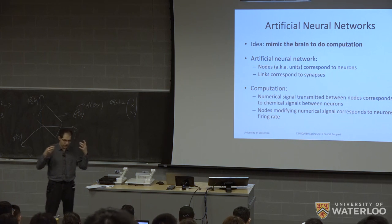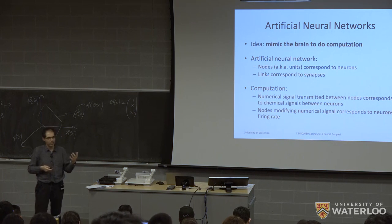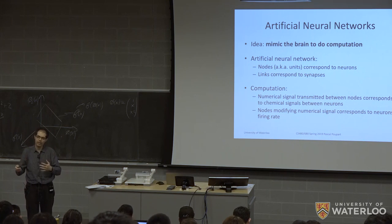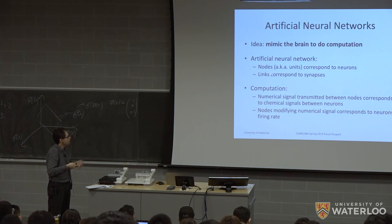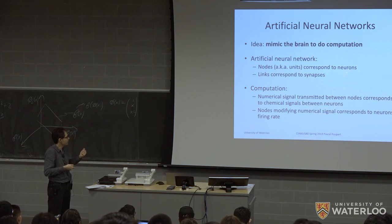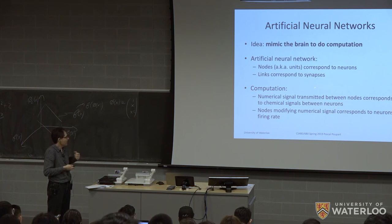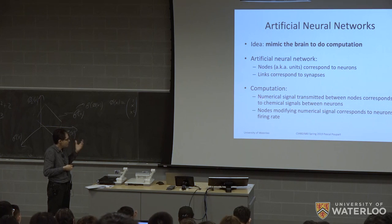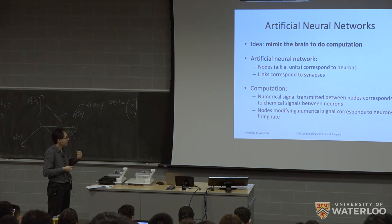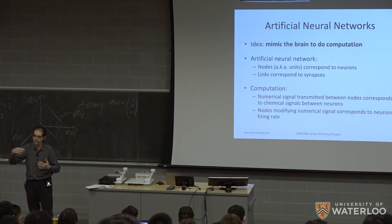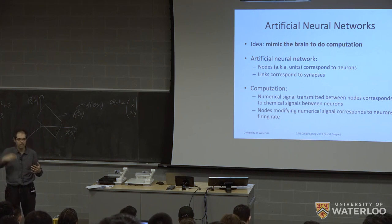In our artificial neural network, the nodes are called units and correspond more or less to neurons in a real neural network; the links correspond more or less to synapses. We're going to compute numbers — numerical signals transmitted between the nodes — and this is roughly analogous to the chemical signals propagated by neurons.